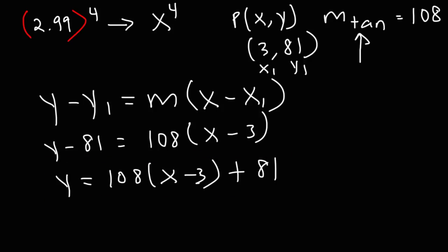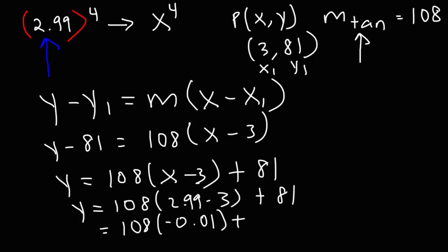So we could use that equation to estimate the y value when x is 2.99. So let's plug this in. It's going to be 108 times 2.99 minus 3 plus 81. 2.99 minus 3, that's negative 0.01. Now 0.01 times anything, all you need to do to get the answer is move the decimal two units to the left. So 108 times 0.01 is going to be 1.08. But it's going to be negative. So what we have is negative 1.08 plus 81.